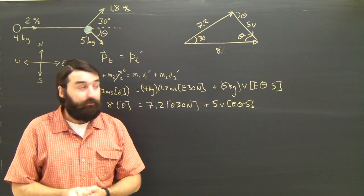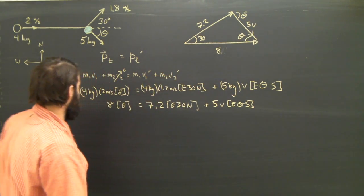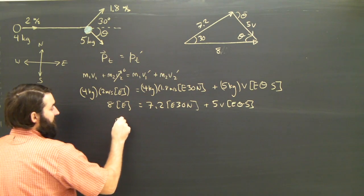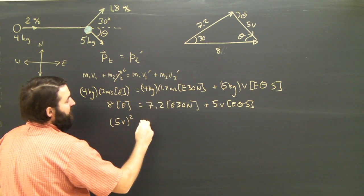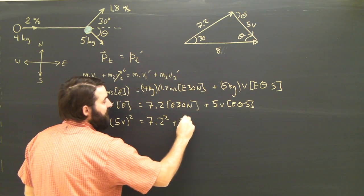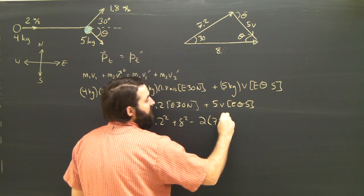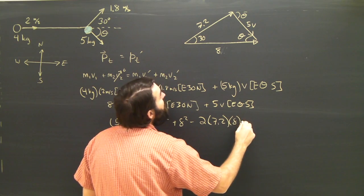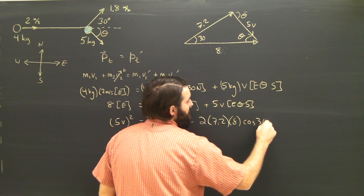So now I can solve this triangle. First of all, I'll find V using the cosine law. 5 V squared is equal to 7.2 squared plus 8 squared minus 2 times 7.2 times 8 times the cosine of 30.